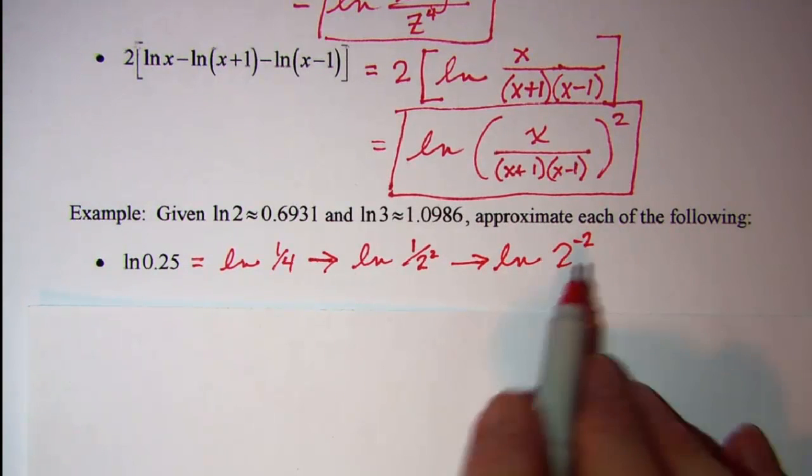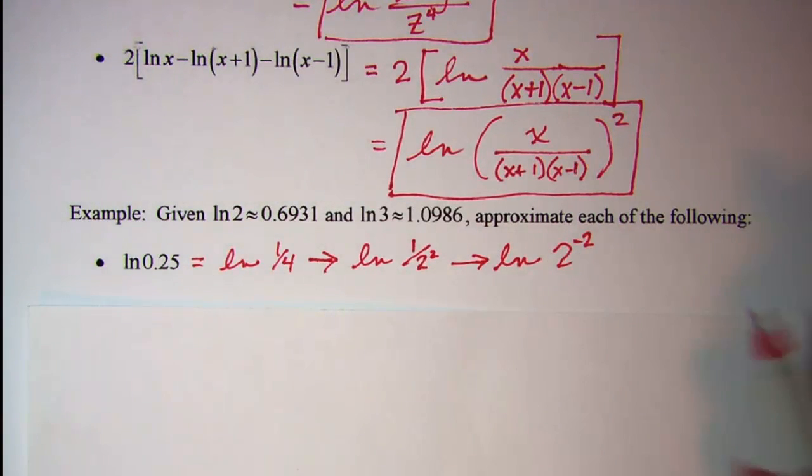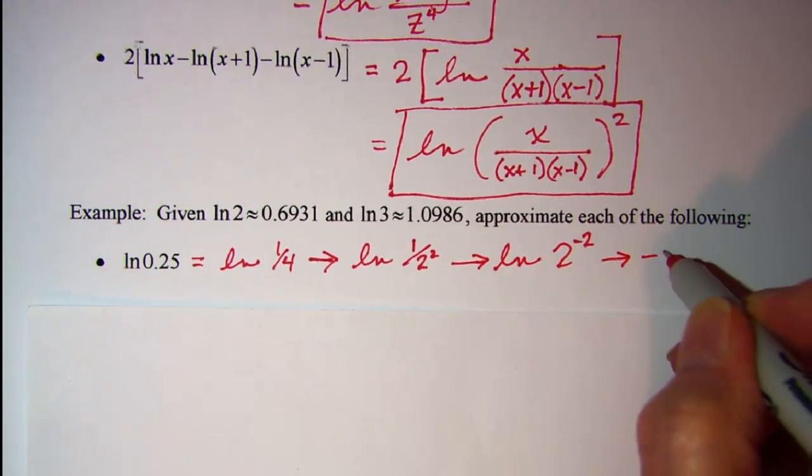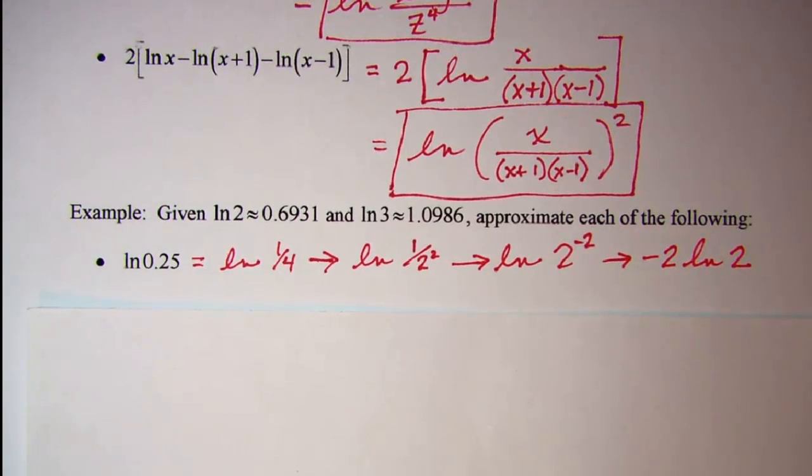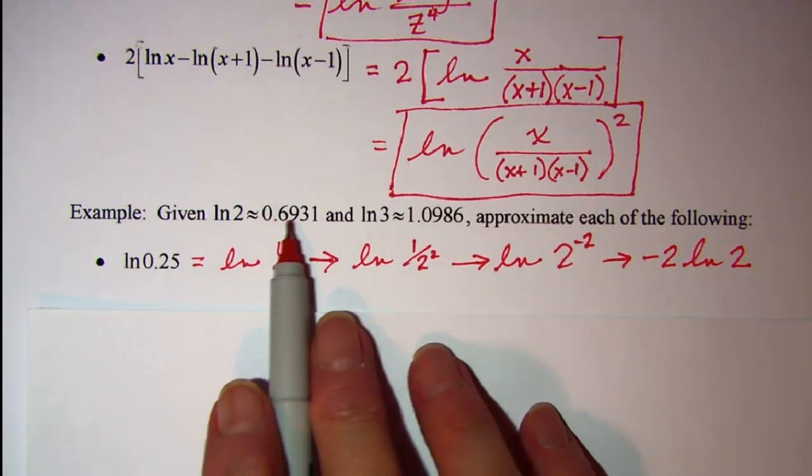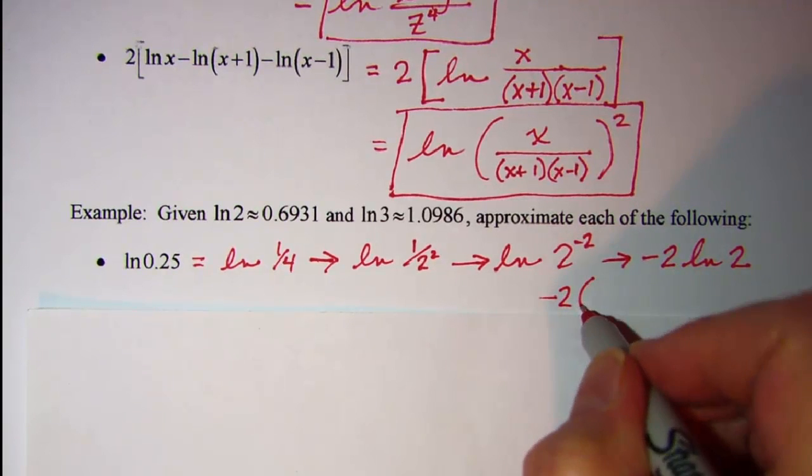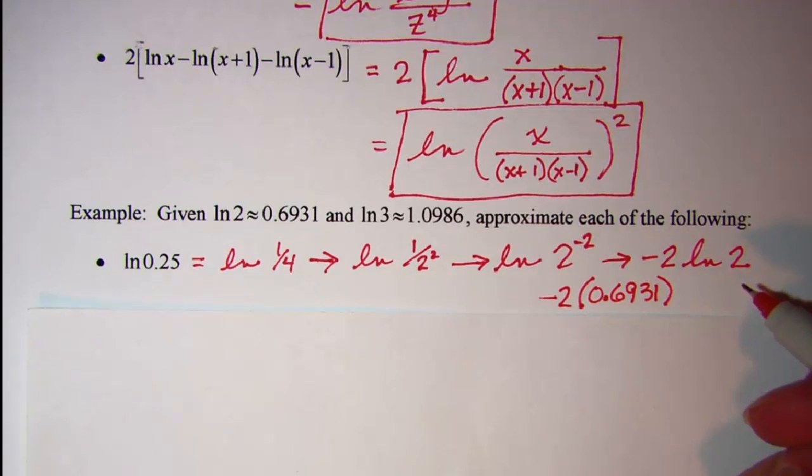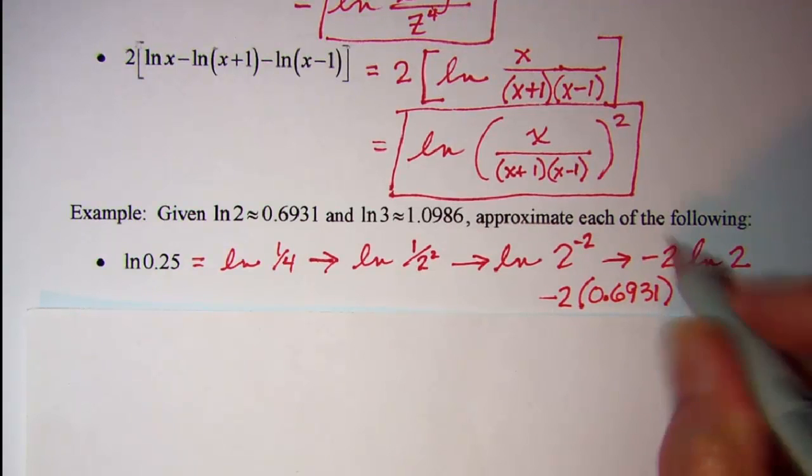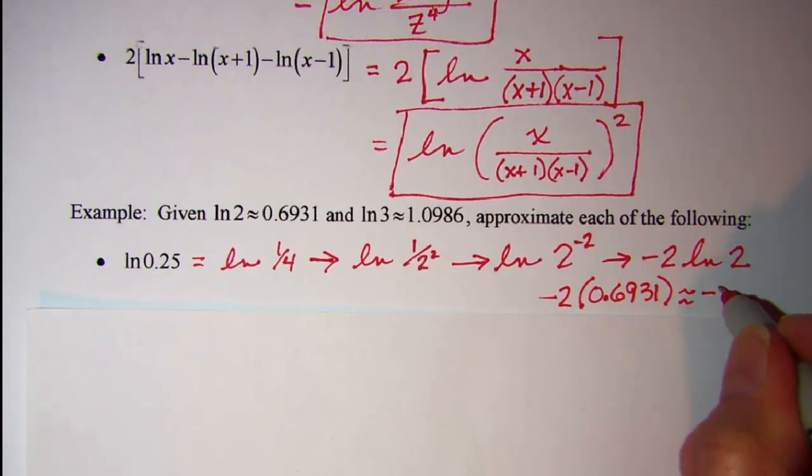And now I have property 4 that allows me to take my exponent out in front of the logarithm. And so this is the same as negative 2 times the ln of 2. Well the ln of 2 we're given is 0.6931, so this is the same as negative 2 times 0.6931, which is approximately equal to negative 1.3862.